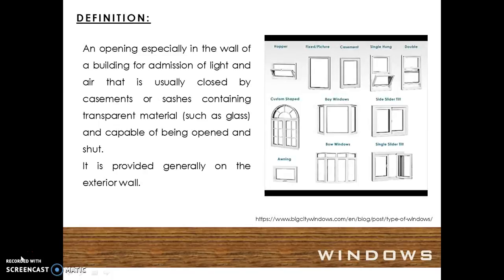A window is an opening, especially in the wall of a building, for admission of light and air, that is usually closed by casement or sashes containing transparent material such as glass, and capable of being opened and shut. It is provided generally on the exterior wall.